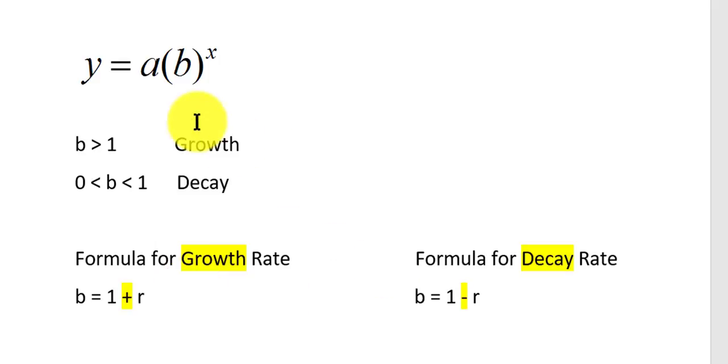So that's the quick way to know if my B is greater than 1, I know we're talking about a growth rate. If my B was some number between 0 and 1, we're talking about the decay rate. And we'd have to use the corresponding formula.